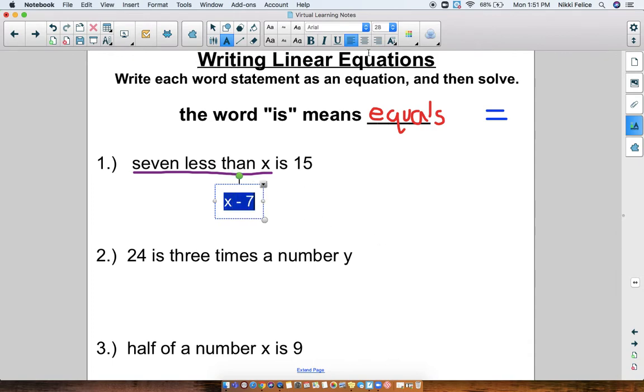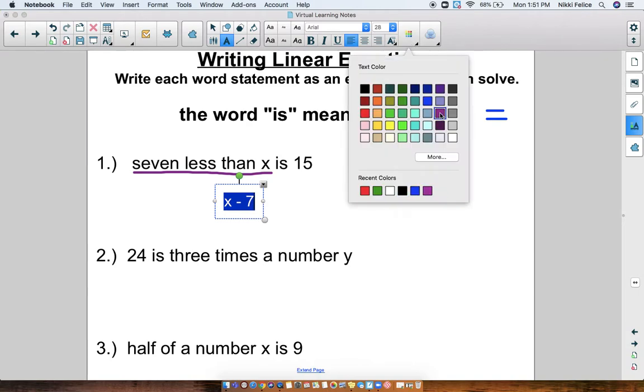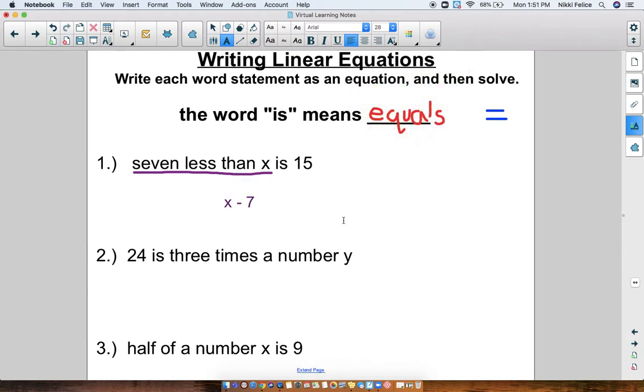But then we have, after that part, is 15. And what did we say the word is means? Equals. So 7 less than x equals 15. If I was going to keep writing that, that means x minus 7 equals 15. There we go. So we wrote our equation. So 7 less than x is 15, which is the equivalent as writing x minus 7 equals 15. Now that we have this equation, we can solve it.